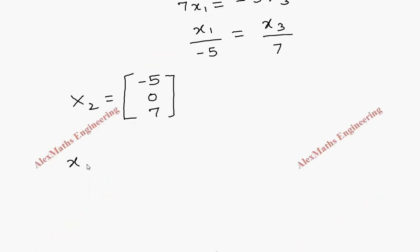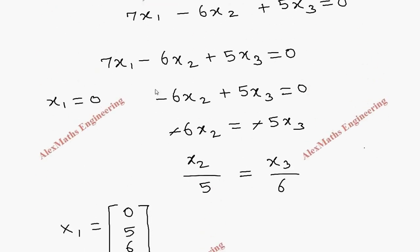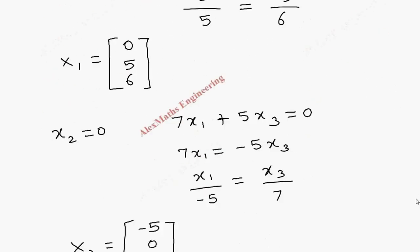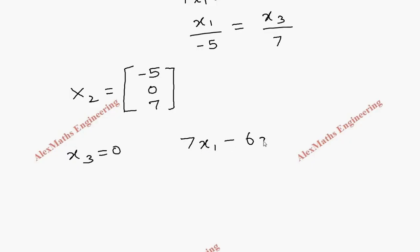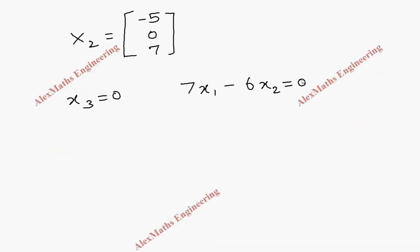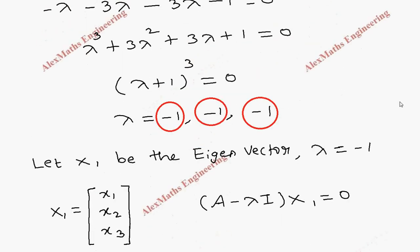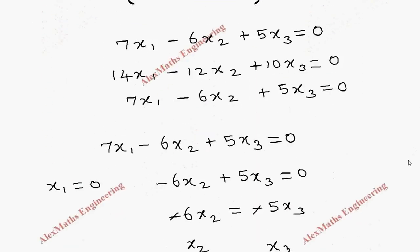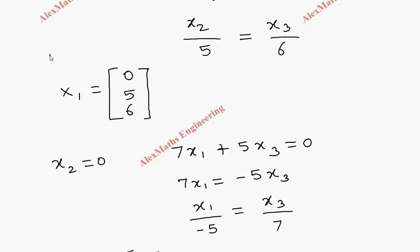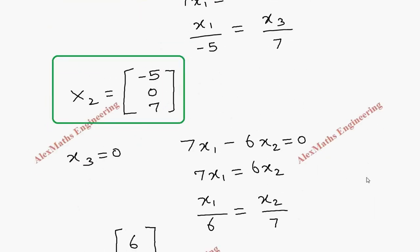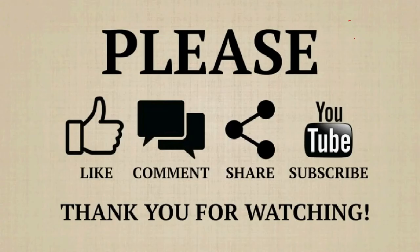For the third eigenvector, let x3 equal to zero. In the simplest equation we get 7x1 minus 6x2 equal to zero, which gives 7x1 equal to 6x2, so x1 by 6 equal to x2 by 7. Therefore the eigenvector X3 is [6, 7, 0]. So we got three eigenvalues, all equal to minus 1 (repeated), and corresponding to these eigenvalues we found three eigenvectors X1, X2, and X3.